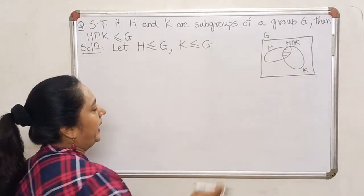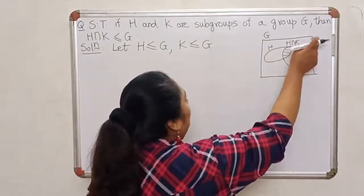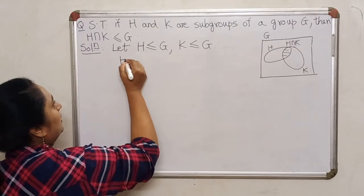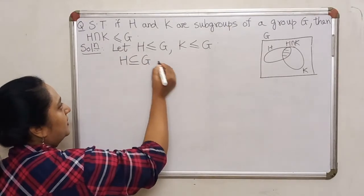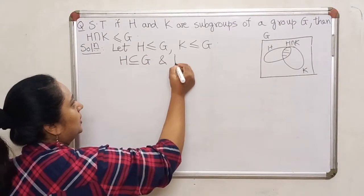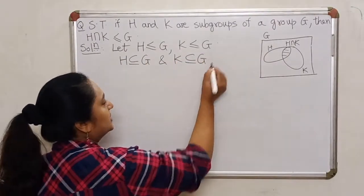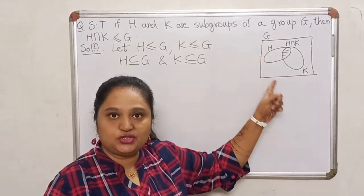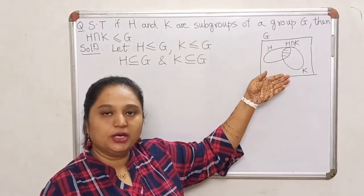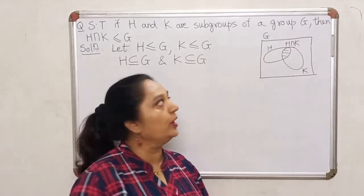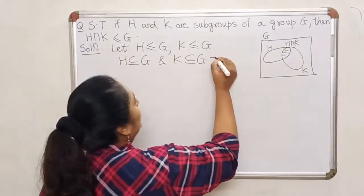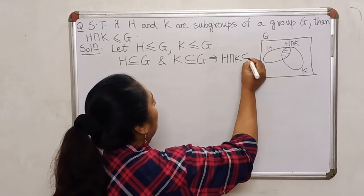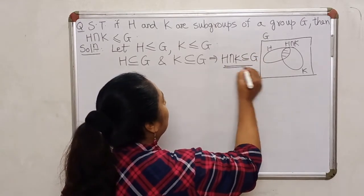Firstly, H is a subgroup of G means H lies inside G, so H is clearly a subset of G. K also is a subset of G. If both sets lie inside G, their common portion is also going to be inside G. So it is clear that H ∩ K will be a subset of G.